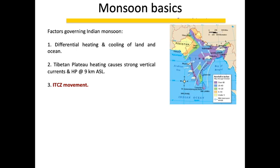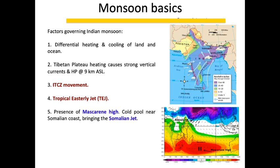The movement of the ITCZ overlaps with the monsoon trough — wherever the ITCZ is present, the monsoon trough is active in that location. You also have the tropical easterly jet because of the subtropical ridge that forms at higher levels, moving from east to west. We also have the Somali jet, which is a byproduct of the Mascarene High in the Southern Hemisphere.